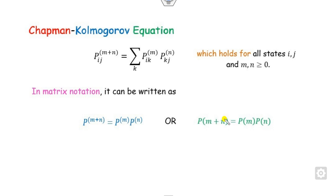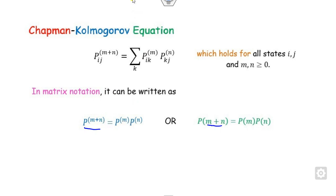In matrix form, the Chapman-Kolmogorov equation can be written as P(m+n) = P(m) · P(n), which can also be written using bracket notation instead of superscript order.